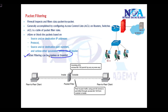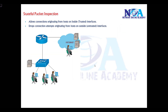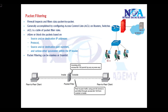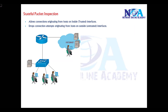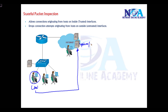Packet filtering can be either stateless or stateful. Stateful packet inspection allows connections originating from the inside interfaces and drops connections from the outside. For example, a user on the LAN should be able to initiate traffic to internet servers like Yahoo or Google, and the return traffic for that session should also be allowed. So if I send a request to http://www.yahoo.com, the request goes out and the reply comes back — that's what should be permitted.